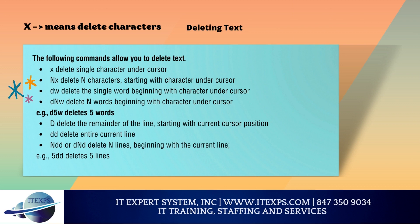Deleting text: X deletes a single character under the cursor. NX deletes N characters starting with the character under the cursor. DW deletes the single word beginning with the character under the cursor. DNW deletes N words beginning with the character under the cursor — for example, D5W deletes 5 words. Uppercase D deletes the remainder of the line starting from the current cursor position. Lowercase DD deletes the entire current line. NDD deletes N lines beginning with the current line — for example, 5DD deletes 5 lines.